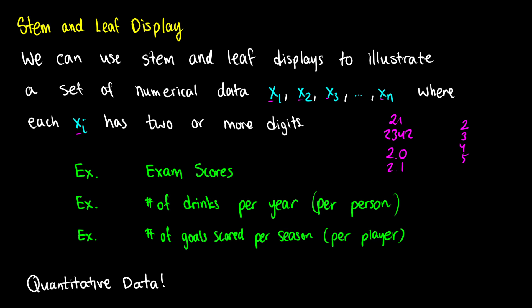Some things you might model in a stem and leaf display include exam scores, since percentages display quite nicely. You could also have the number of drinks per year per person — say 10 people recording how many alcoholic beverages they have in a year, getting values like 67, 62, 0, 31, or 150. In sports, you could find the number of goals or baskets scored per season per player. It's good for quantitative data and seeing what the values are, though it's not a great statistical presentation tool — but it's simple, which is why we start here.